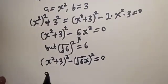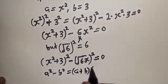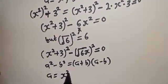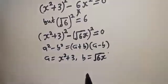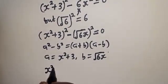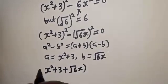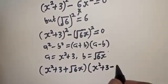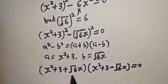Now if you look at this, this is a difference of squares. a² minus b² equals (a + b)(a − b), where a is equal to (x² + 3) and b is equal to √6 · x. Substituting, we have (x² + 3 + √6·x)(x² + 3 − √6·x) is equal to zero.